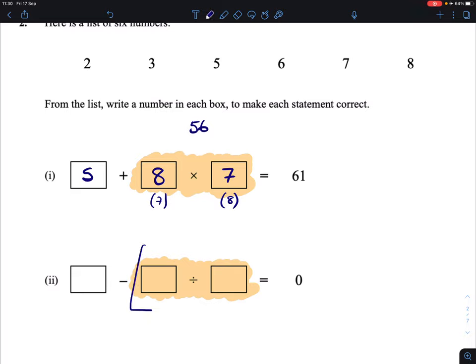So the answer to this division sum, we want it to be the same size as the number that goes there. Because when we take them away from each other, our answer is 0.